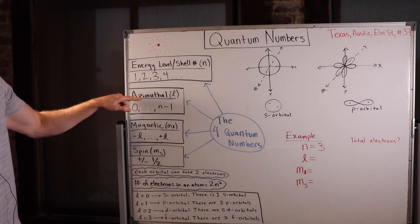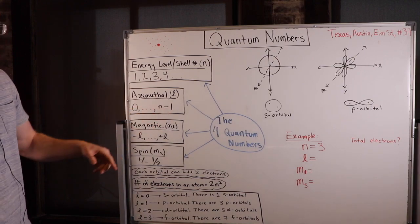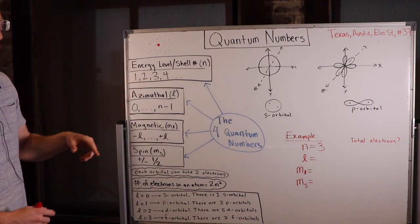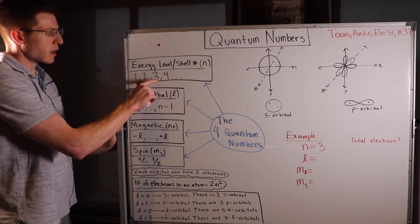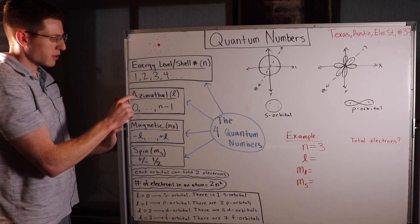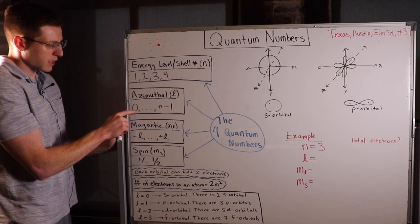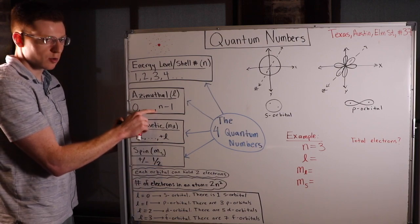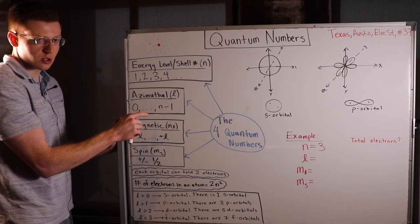The azimuthal number goes from 0 to N minus 1. So let's say N was 3 — an electron with energy level 3. That means the azimuthal number L could either be 0, 1, or 2, because 3 minus 1 is 2.